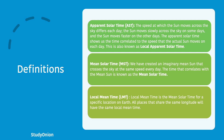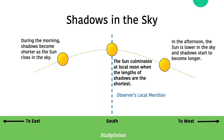Let's look at this diagram about shadows. During the morning, towards the east, shadows become shorter as the sun begins to rise in the sky. Around midday, the sun culminates — reaching the highest point in the sky — and the lengths of the shadows are the shortest. In the afternoon, the sun is lower in the sky, which means the shadows become longer, and this is towards the west in the sky.